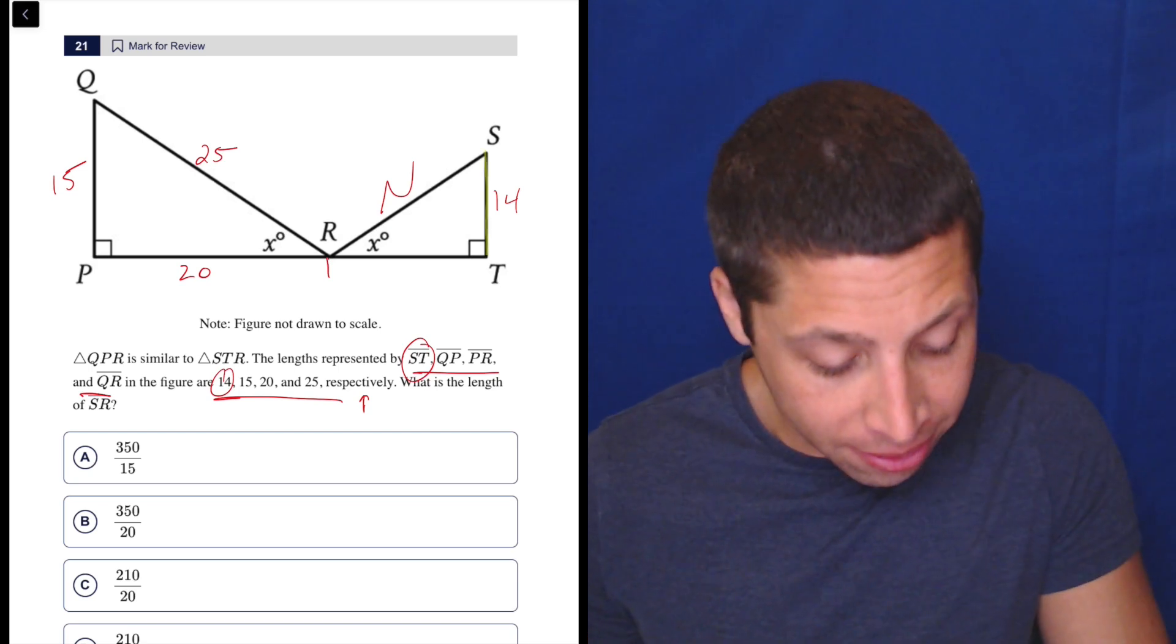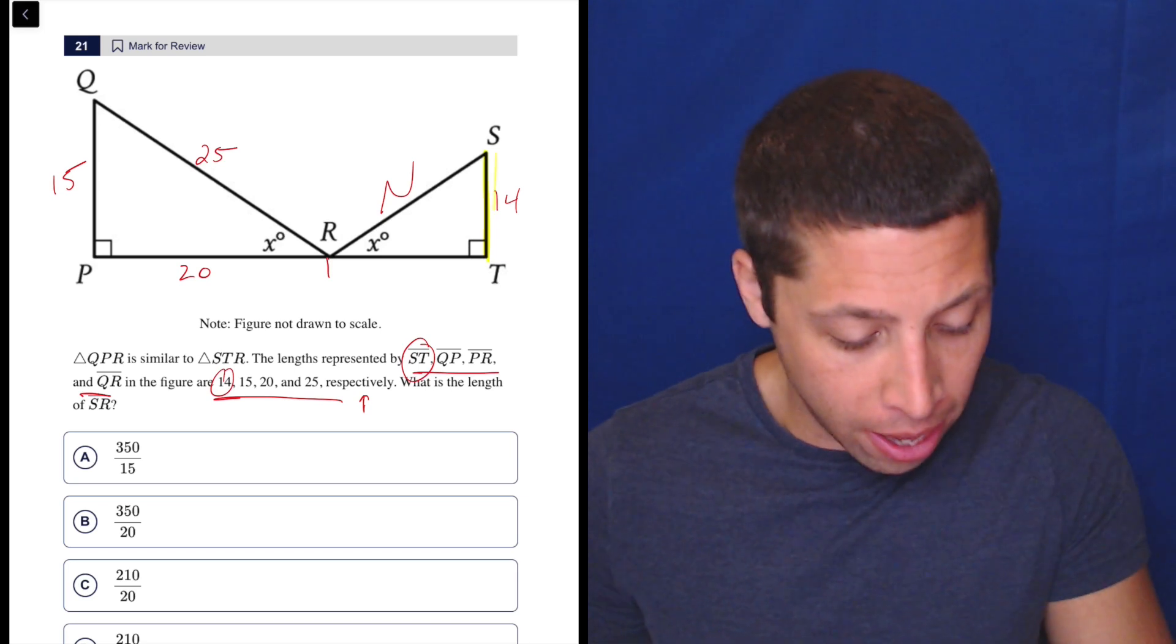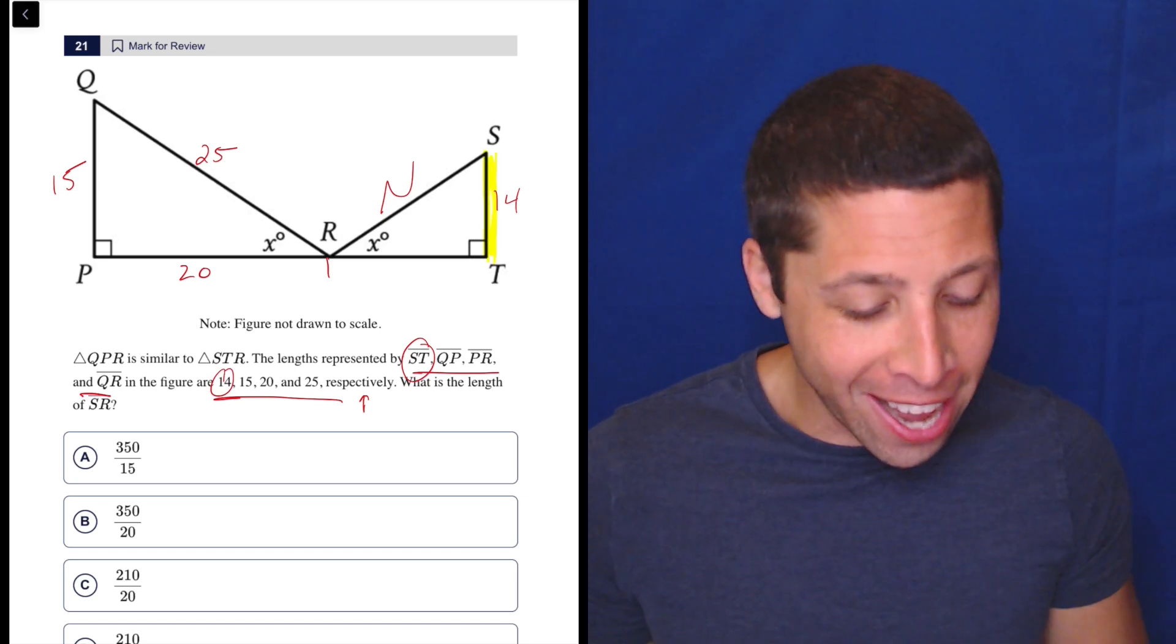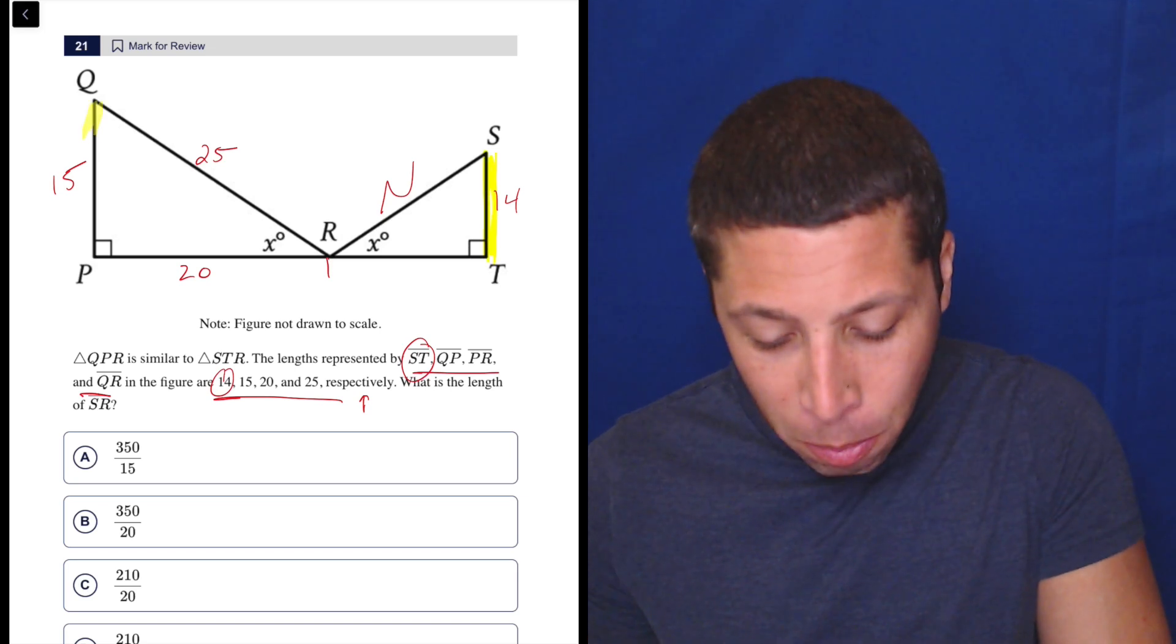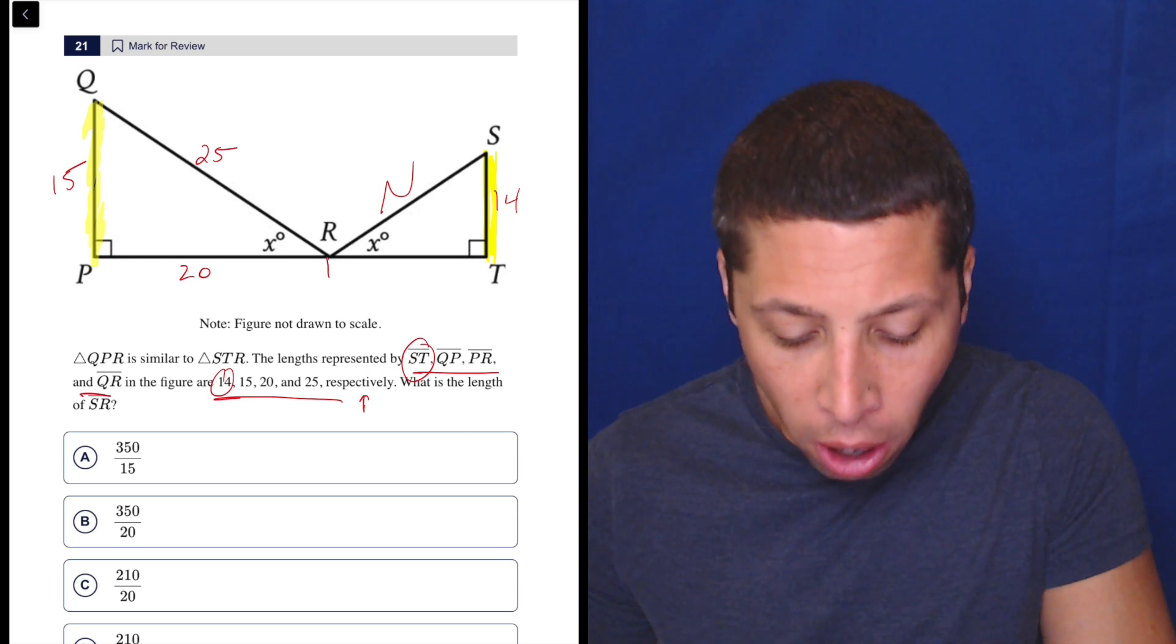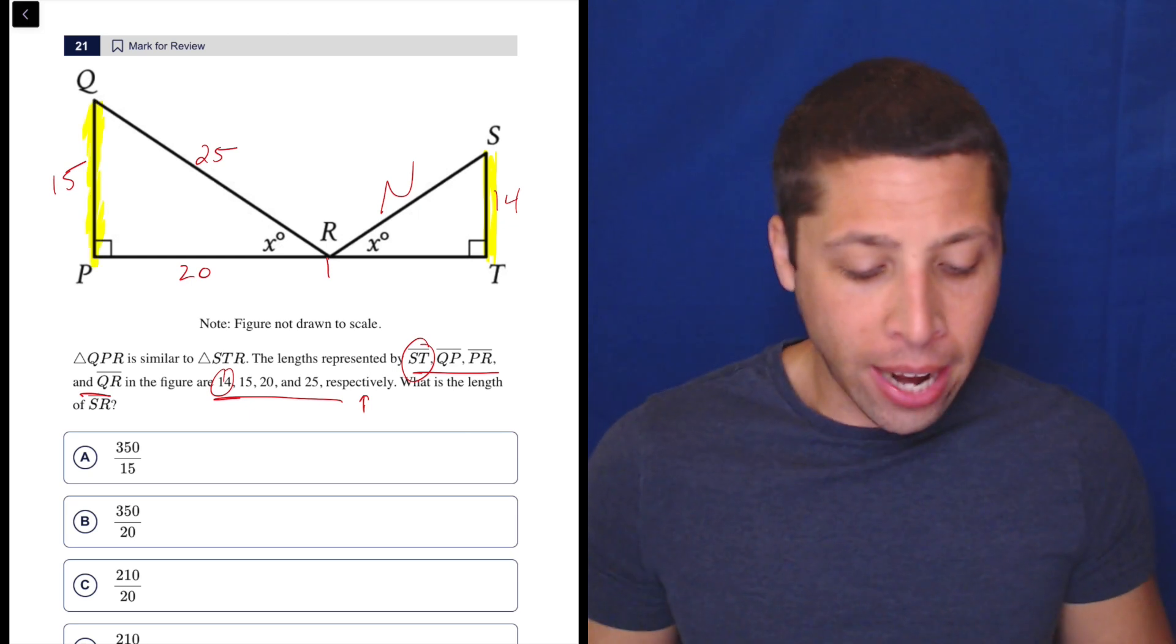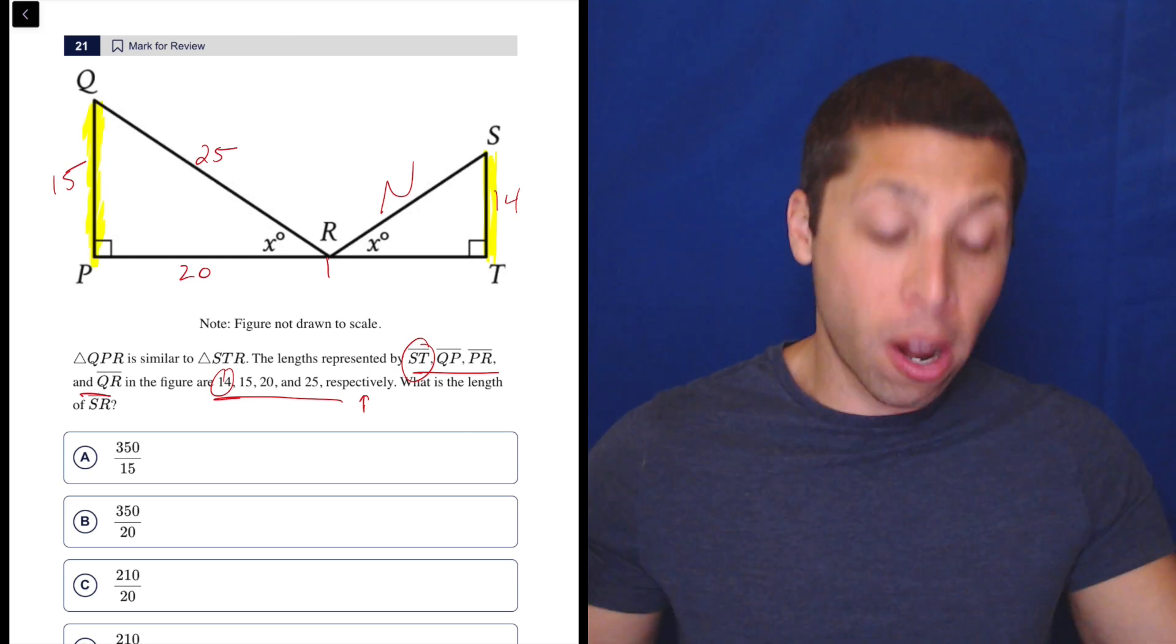So if I think about the X, I know that ST right here and QP right here are corresponding. And I know that because they're both across from the X, right?